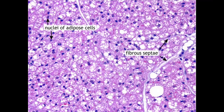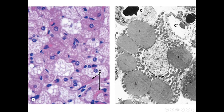You can see a section from the brown adipose tissue with multiple lipid droplets inside the cells and the nucleus in the central position. At higher magnification you can see the centrally positioned nucleus and multiple droplets. Electron microscope pictures show the nucleus, fat droplets, and a large number of mitochondria inside the cell.